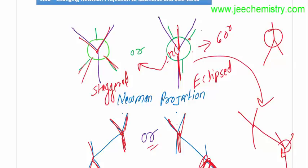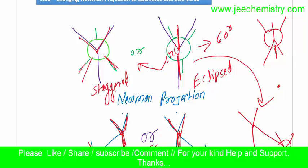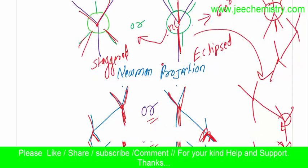Now, both of the parallel bonds will come to the standard directions. The back carbon will be in the same position. Now we can draw the end carbon in this format. In this format, we can draw the Sawhorse formula from the Newman projection formula.